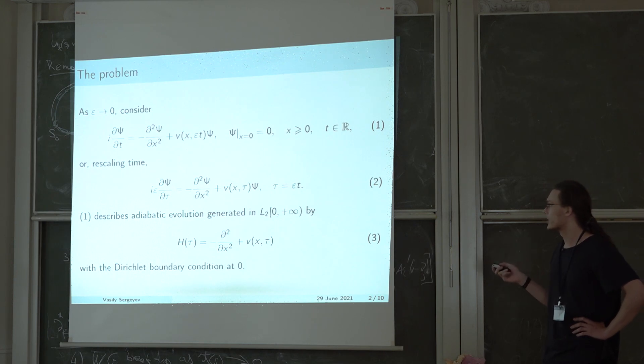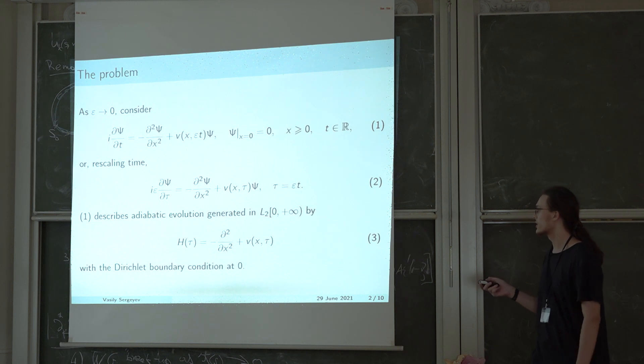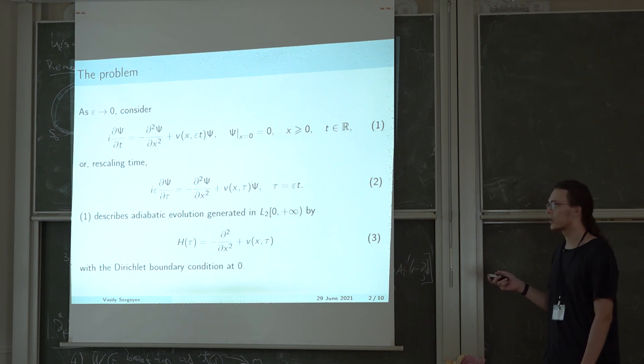We are interested in the case when the spectrum of this stationary operator, for any time tau, consists of the absolute continuous part filling the half line from 0 to plus infinity and a finite amount of negative eigenvalues having reached it disappear.